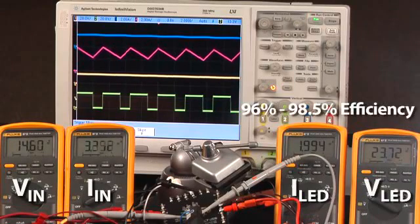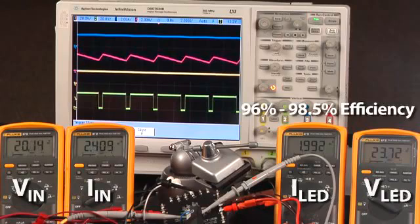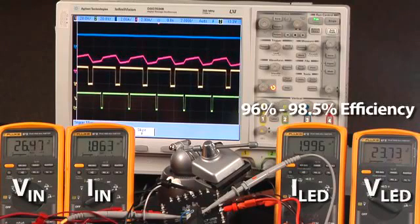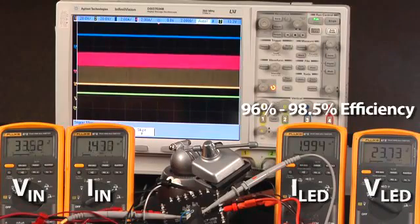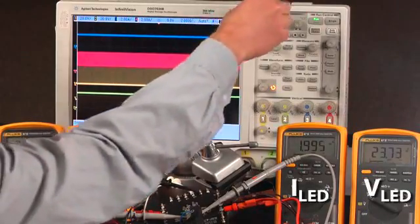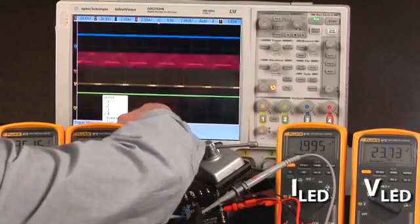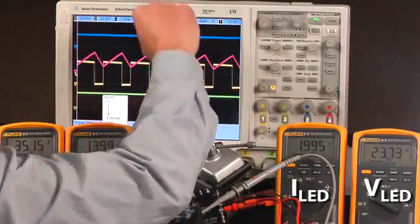As I raise VIN back up and above 36 volts, the IC first returns to buck-boost operation and then to two-switch buck operation. This switching scheme works very well.